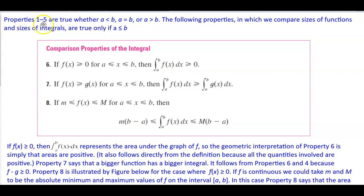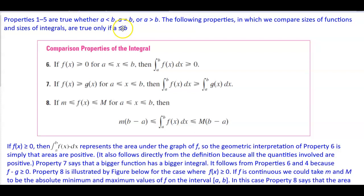Properties 1 through 5 are true whether a is less than b, a is equal to b, or a is greater than b. The following properties, in which we compare sizes of functions and sizes of integrals, are true only if a is less than or equal to b. These are called the comparison properties of the integral.